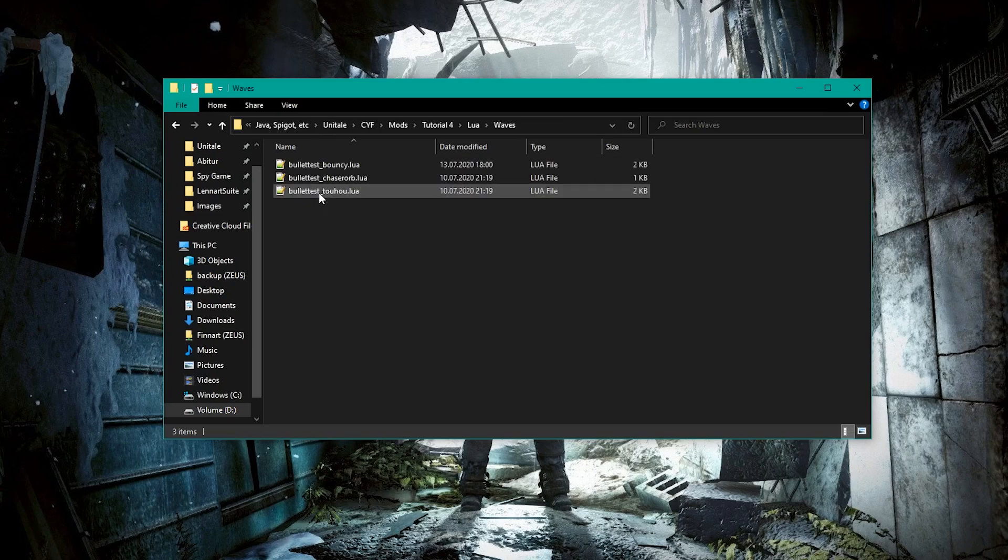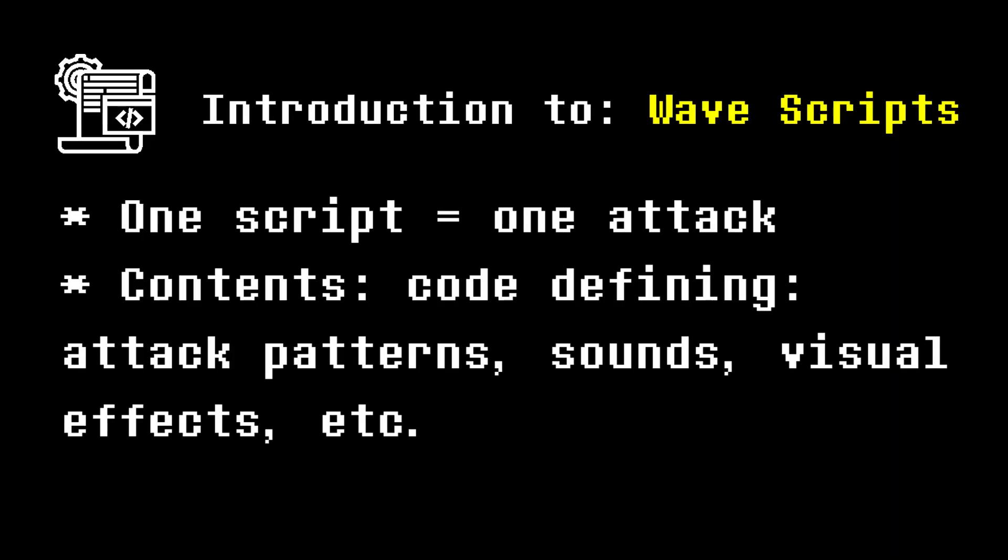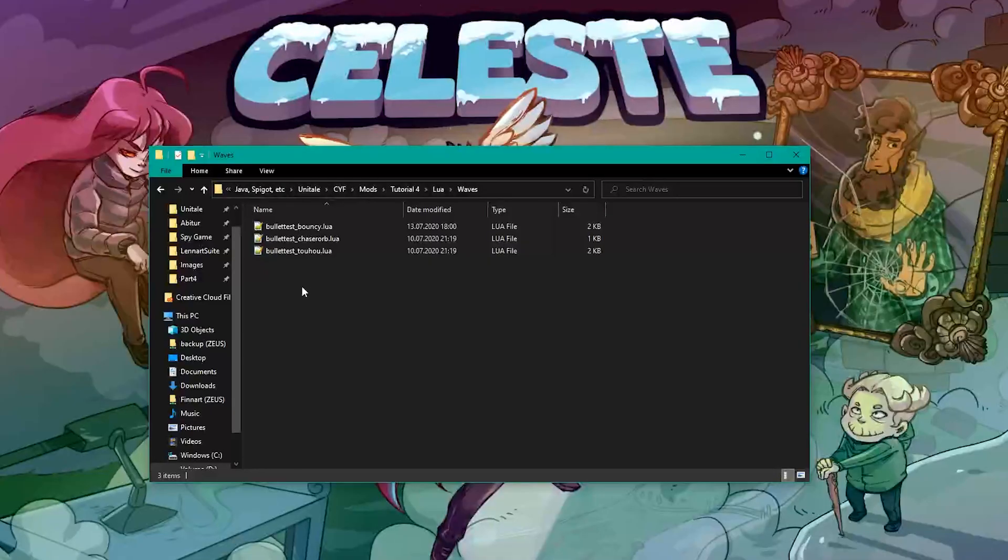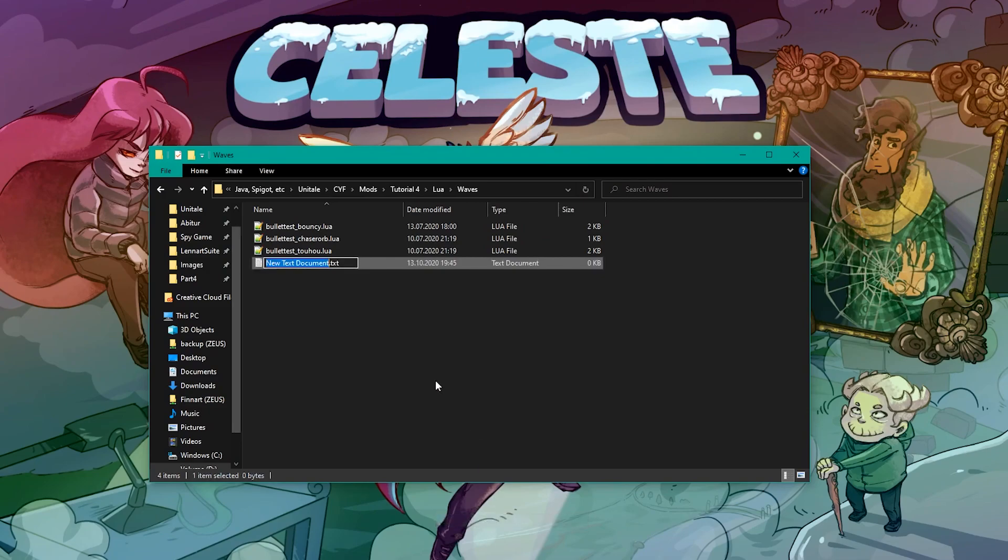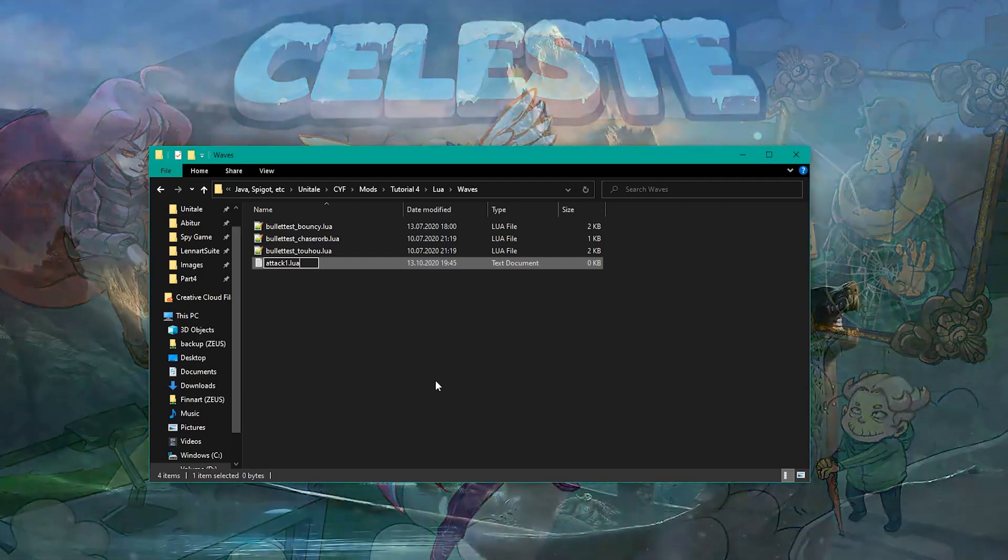Now the what. Each Lua file in this folder is one wave or attack. All functionality of a wave is defined inside of a wave script. This would be the spawning and moving of bullets and maybe some visual effects and sounds accompanying the attacks. Let's create a text file and turn it into a Lua file by changing its ending from .txt to .lua. You might get a warning doing so, but there's nothing to worry about.